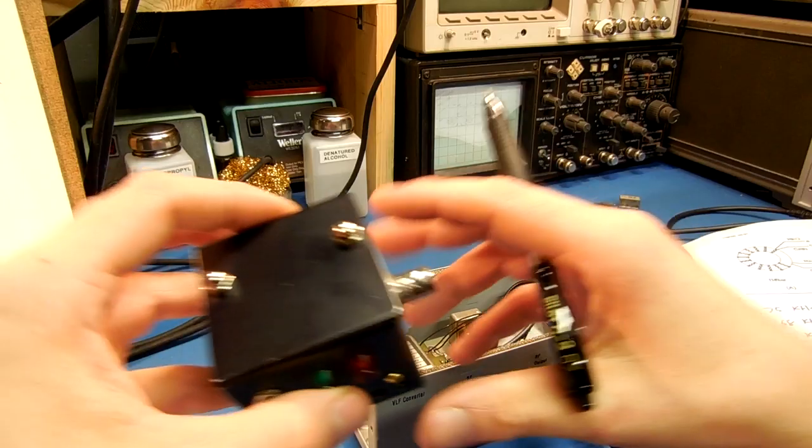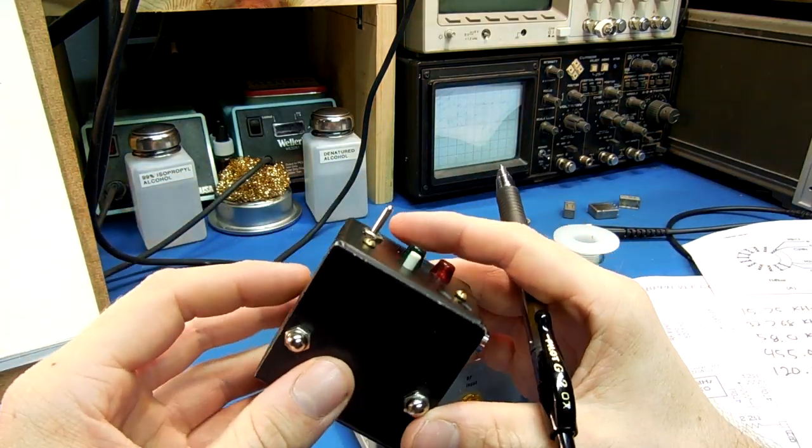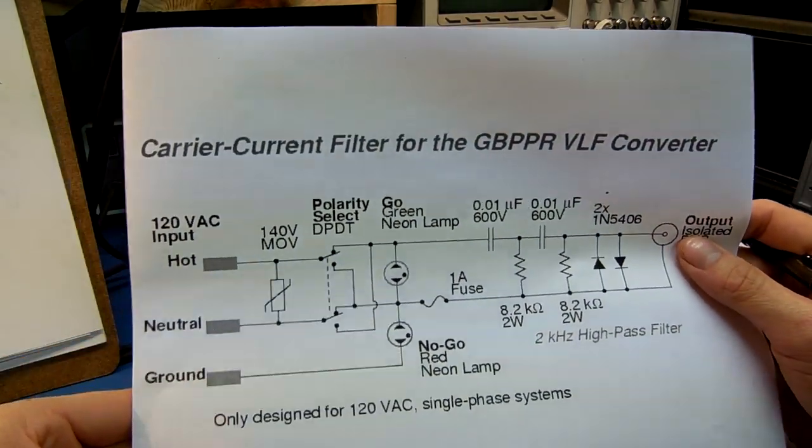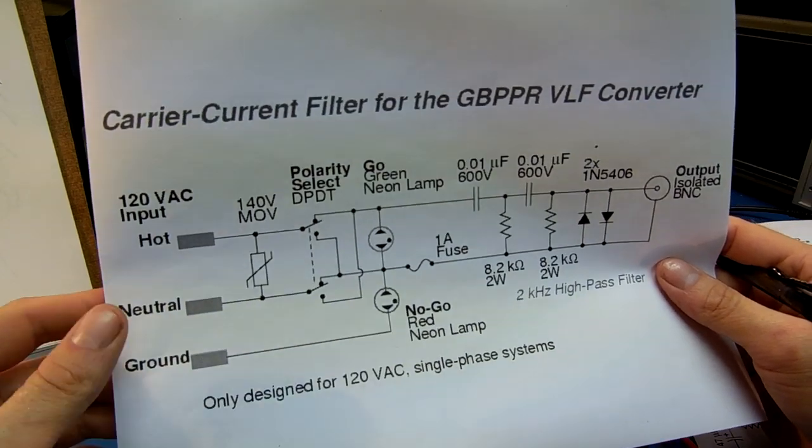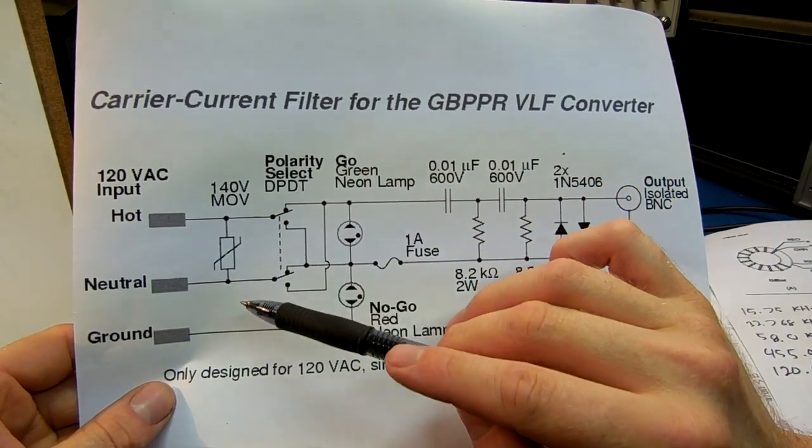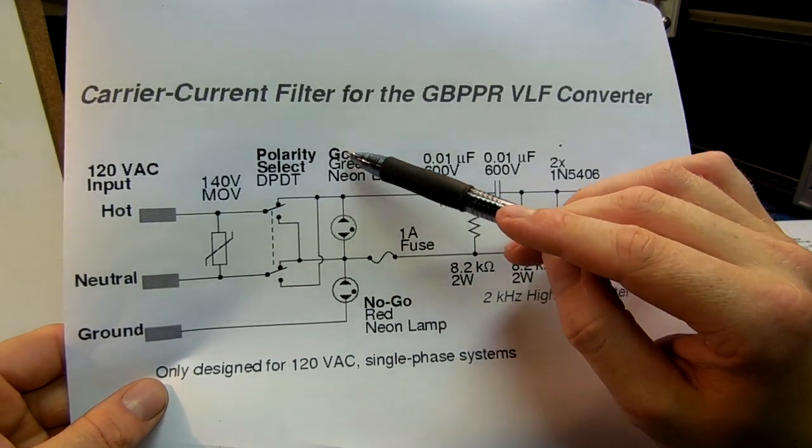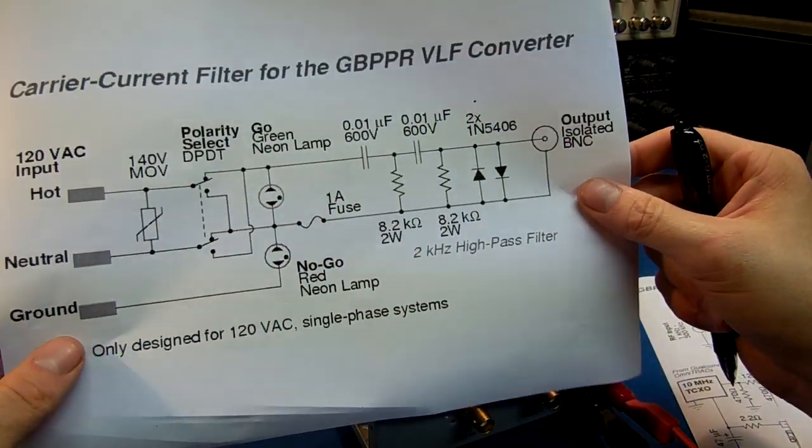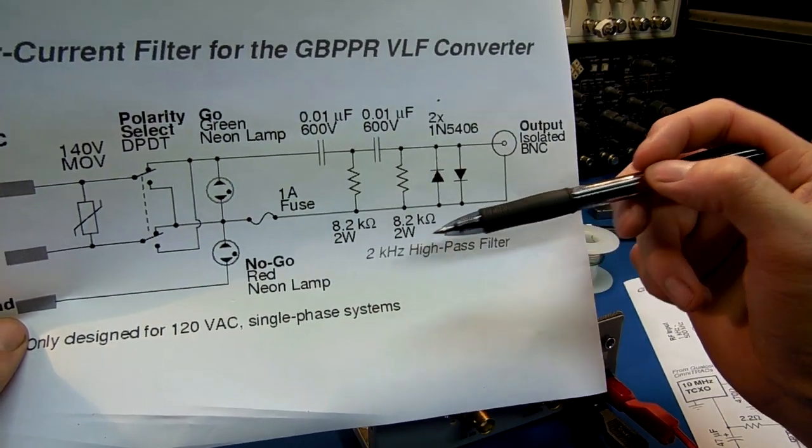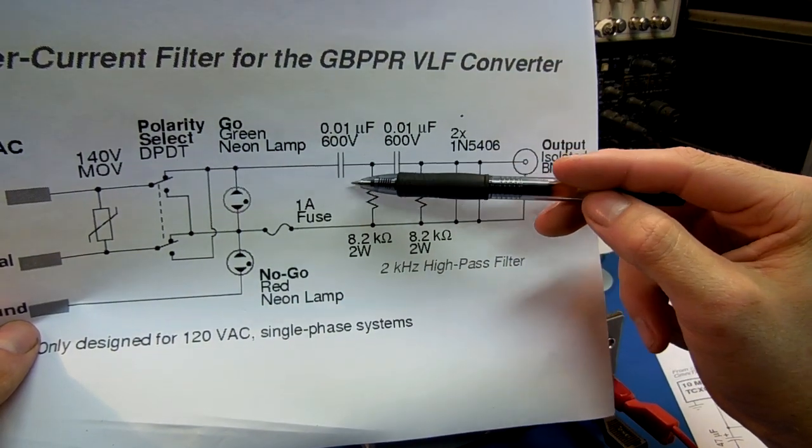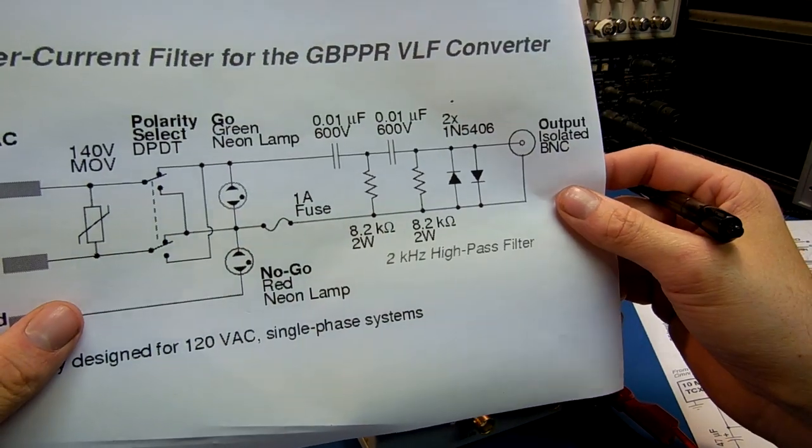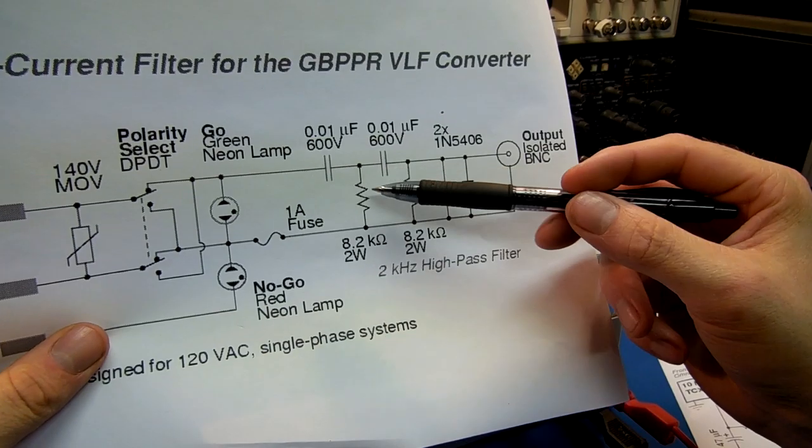That brings me up to this little device here I made. This is just an old wall wart, metal wall wart that I found. And what this is is a power line carrier current filter for the VLF converter. What this allows you to do is to plug it into a 120 volt AC input. And we have a polarity switch just to make sure everything is the correct polarity. When the hot and the neutral are correct, the green neon lamp for a go indication will light. That passes it onto a four pole, essentially, high pass filter set around two kilohertz. The 0.01 microfarad, this has to be an AC rated capacitor. Both of these AC rated capacitors. And 8.2 kilohm, 2 watt, like a metal, metal film resistor. So, they don't, you want quality components.